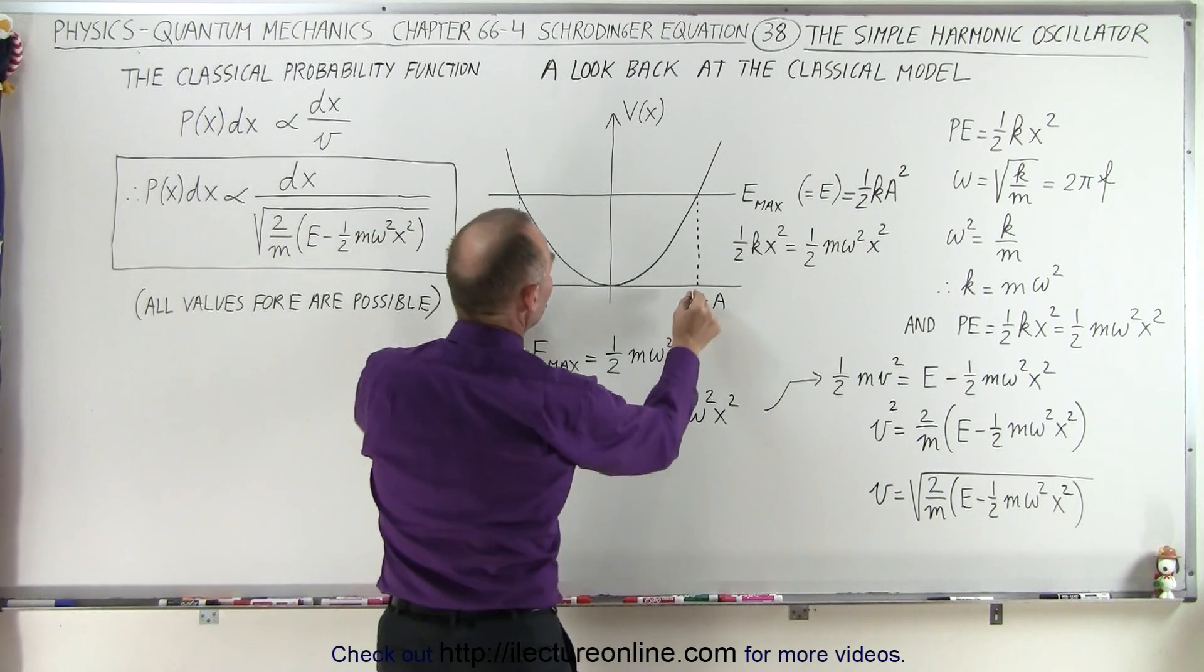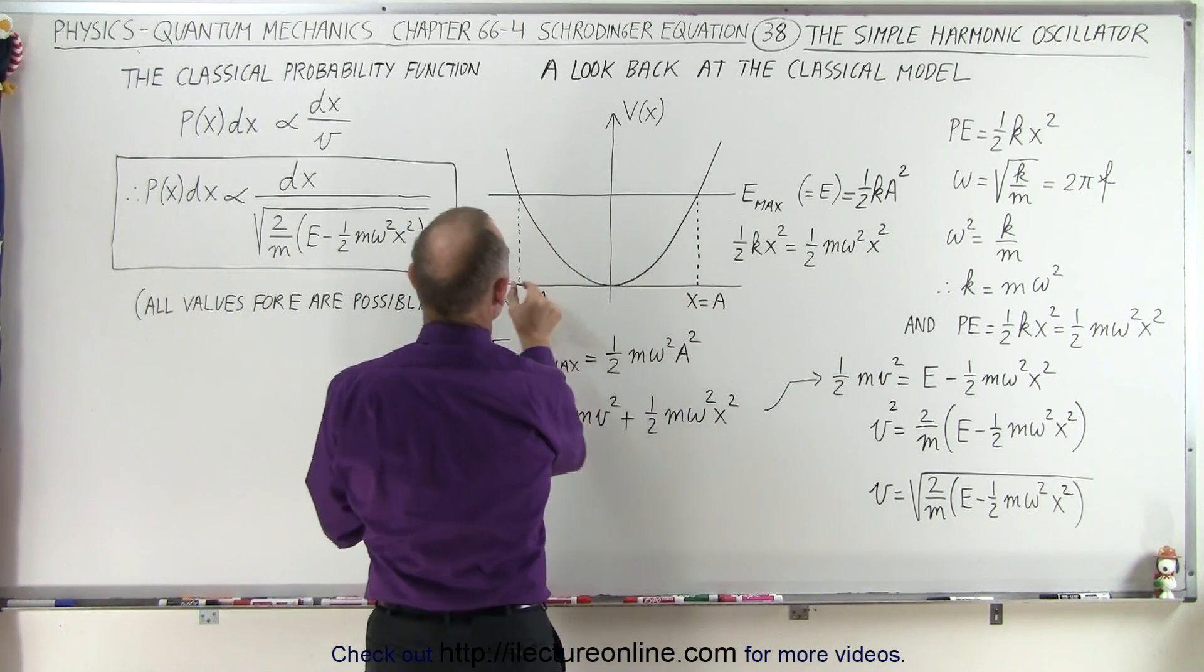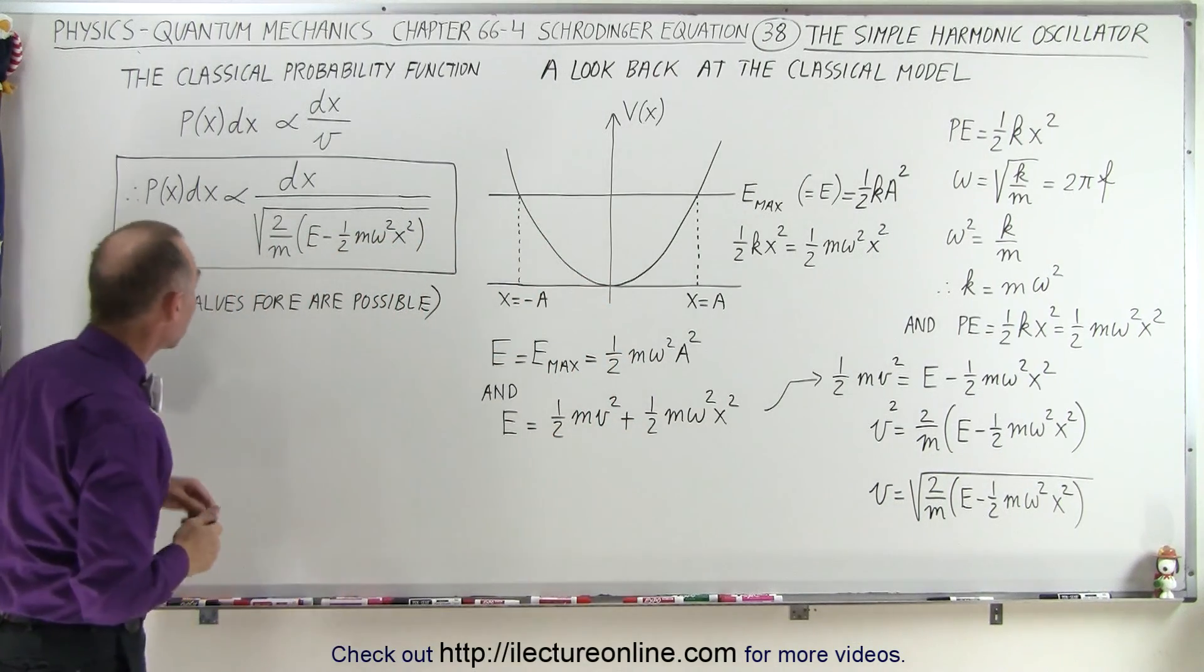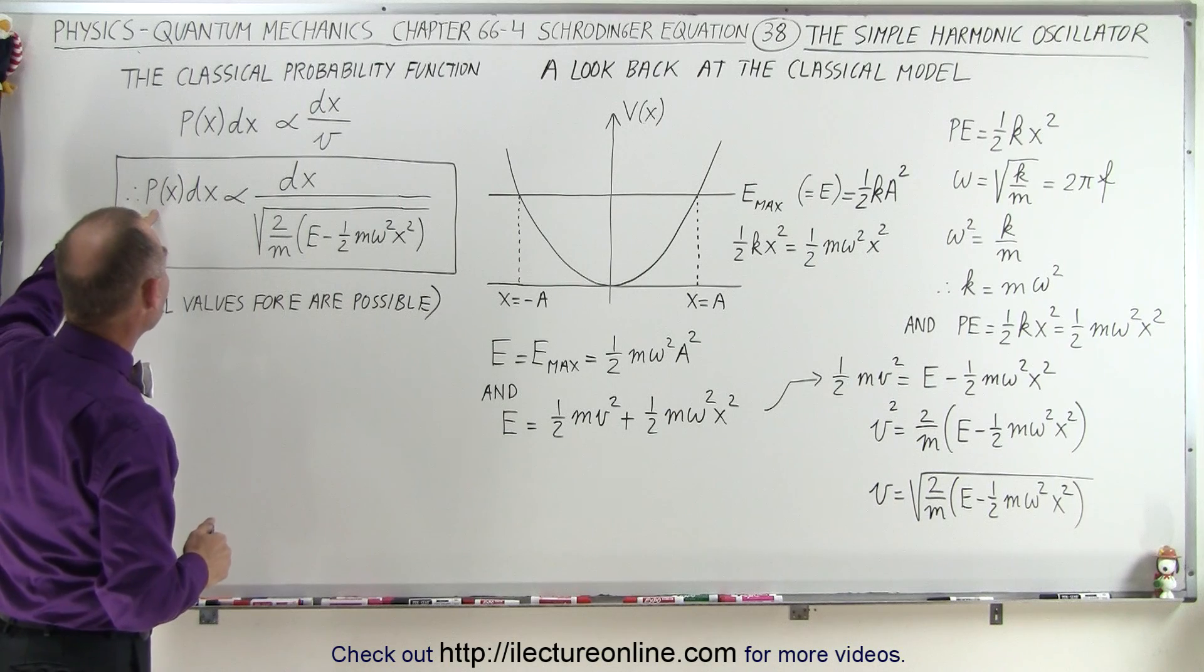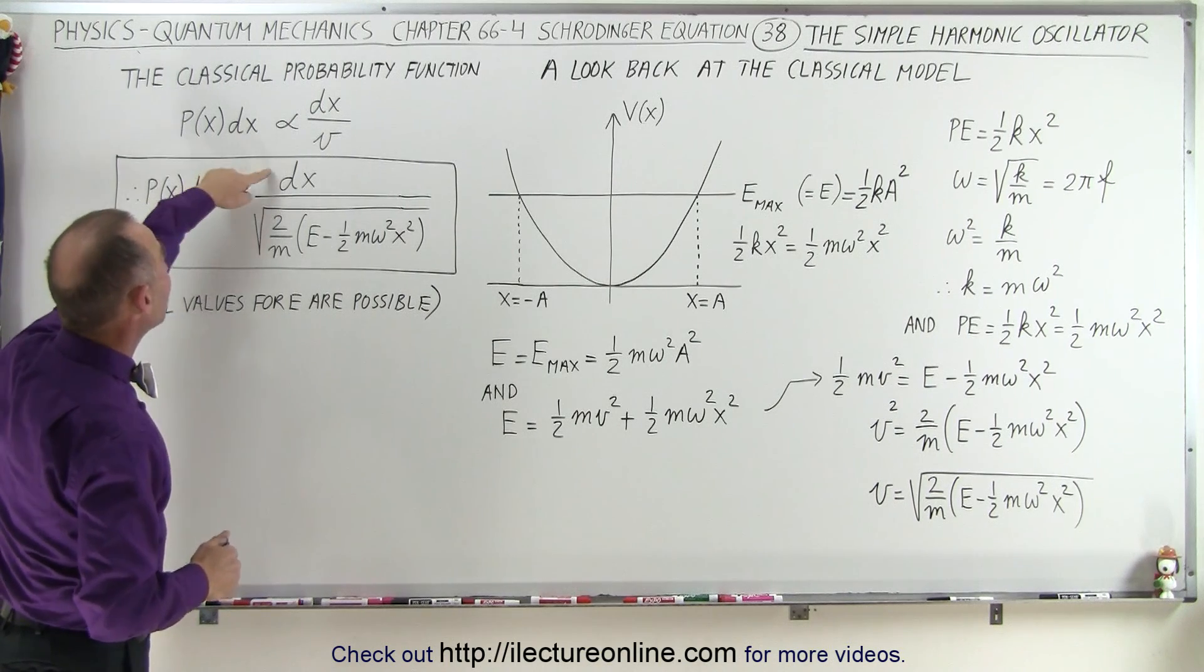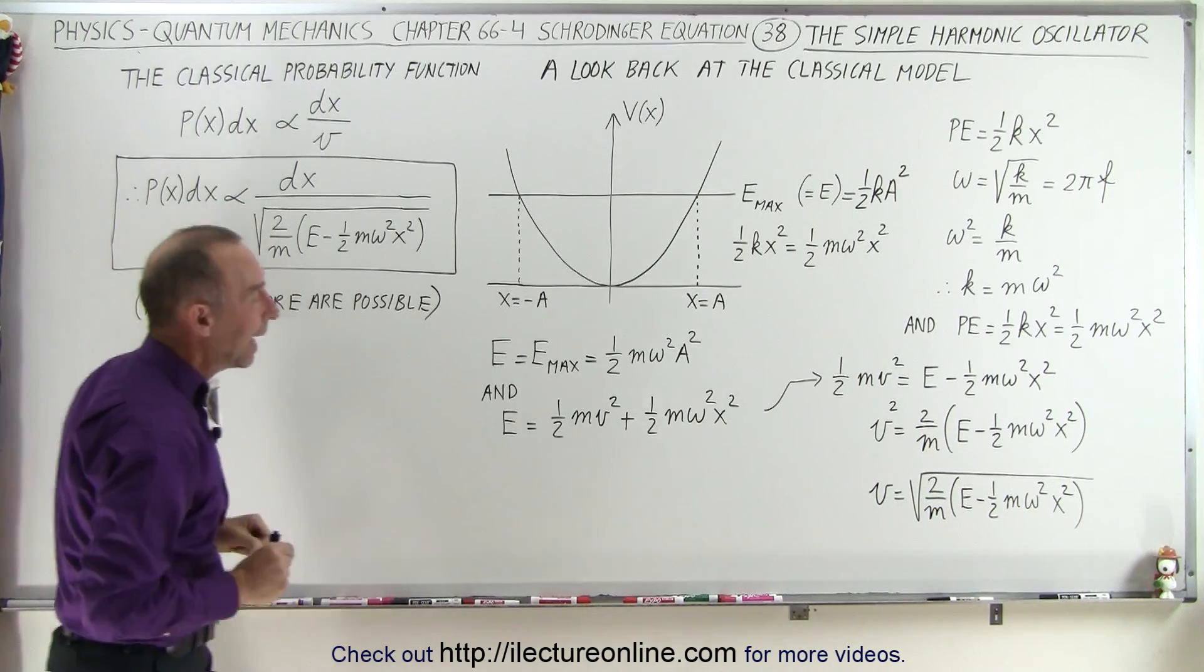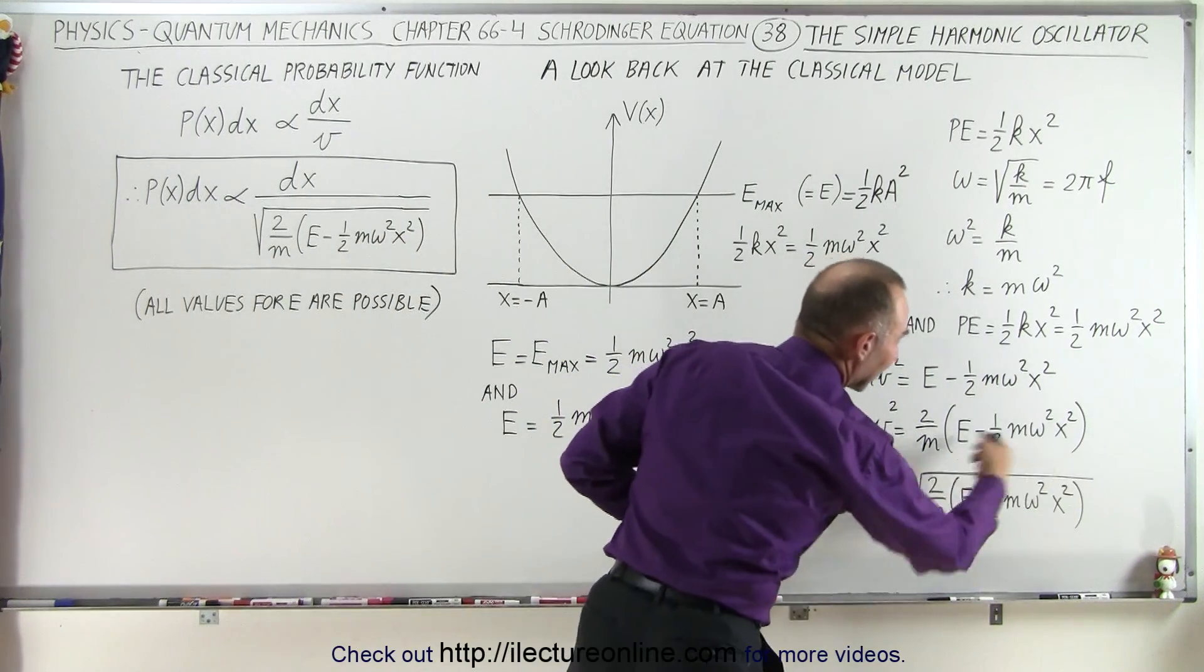So, I would think I would have a higher probability of finding the particle at the end point, where it's moving very slow, versus finding the particle here, where it's moving very fast. Now, if the probability is proportional to dx, however wide I make that slice, divided by the velocity, and I have the velocity defined like this, based upon my energy equation.